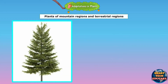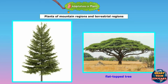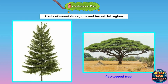Plants that grow in mountainous regions have adapted themselves to heavy snowfall and strong winds. These plants grow straight with short sloping branches and also have needle-shaped leaves. But the plants that grow in windy regions such as grasslands are flat-topped so that they expose very little of their area to the wind.